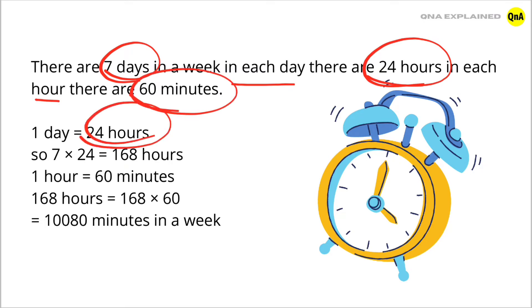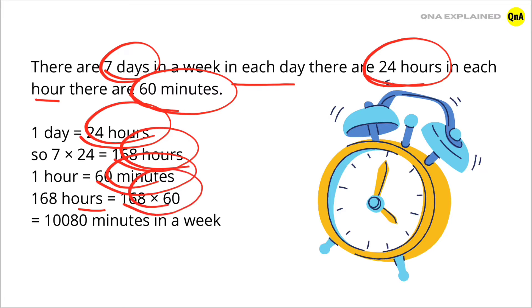So, 7 into 24 equals 168 hours. 1 hour equals 60 minutes. 168 hours equals 168 into 60, which equals 10,080 minutes in a week. Let's see again.